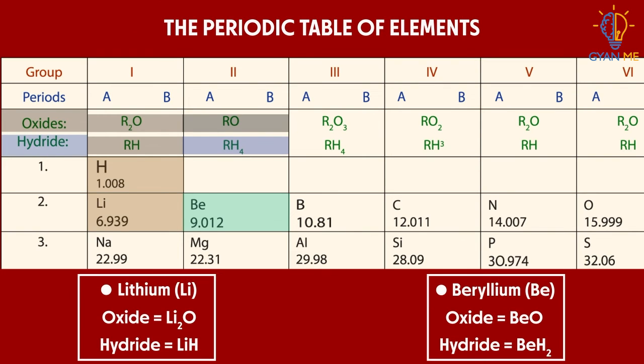Since the hydrides and oxides of lithium are not same or similar, like that of beryllium, he placed Be next to Li and not below it.